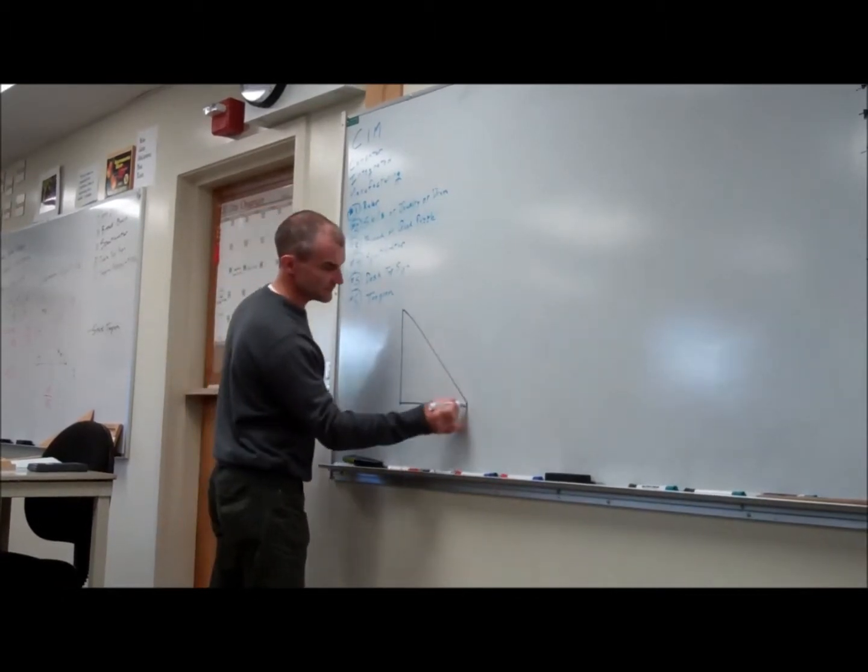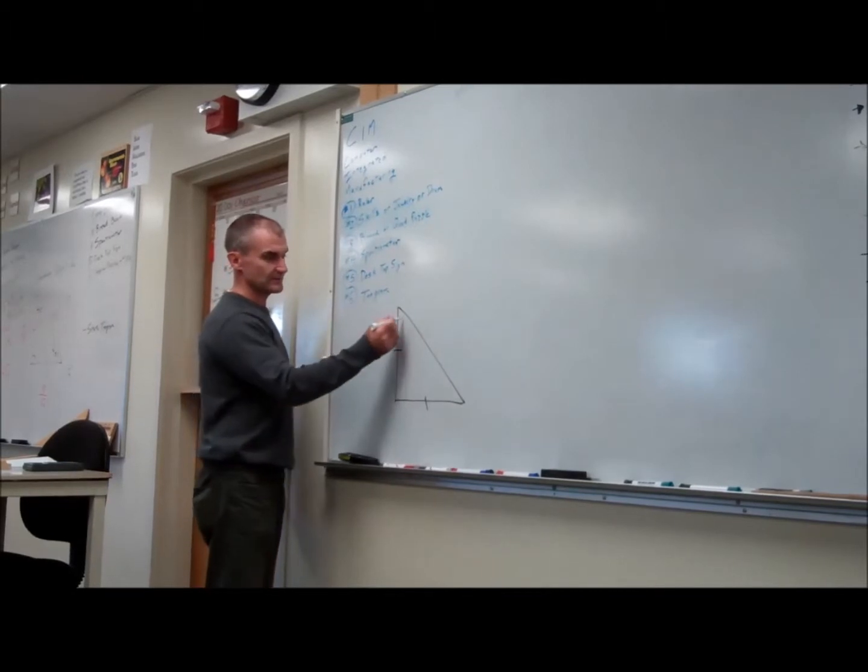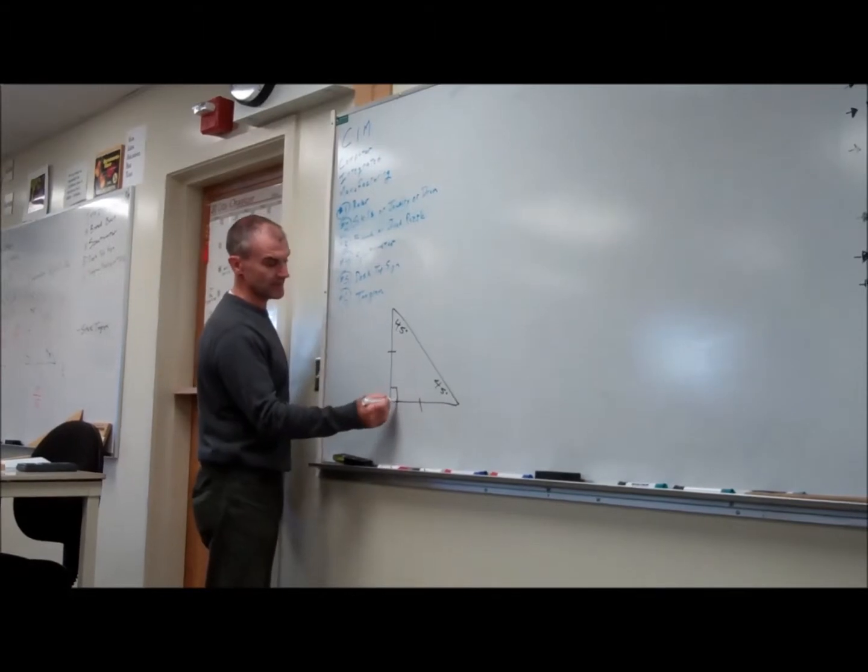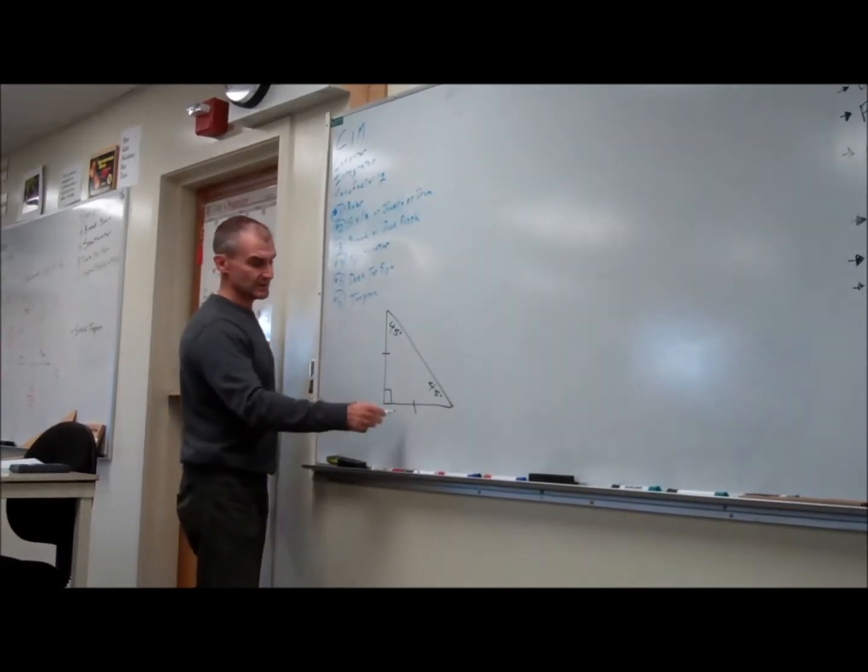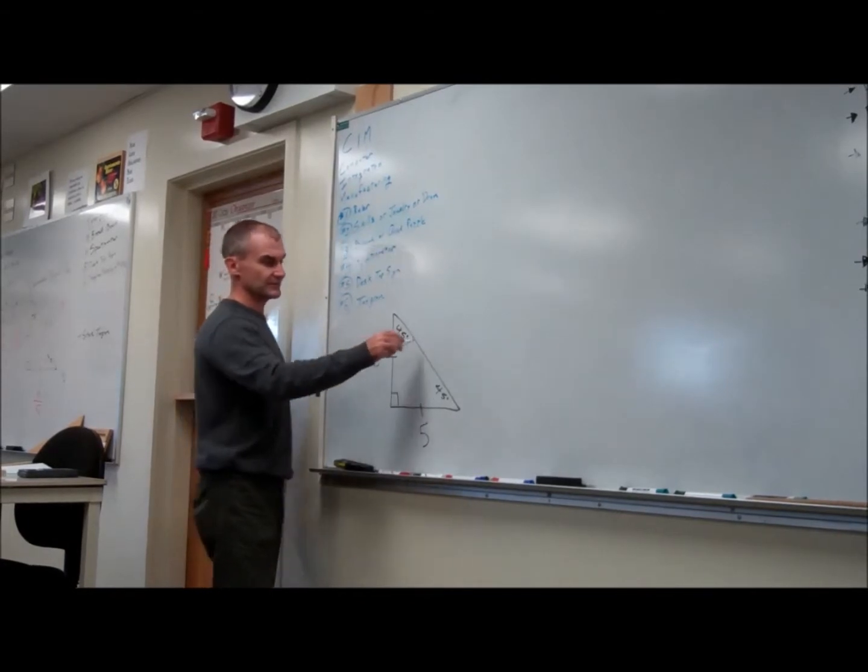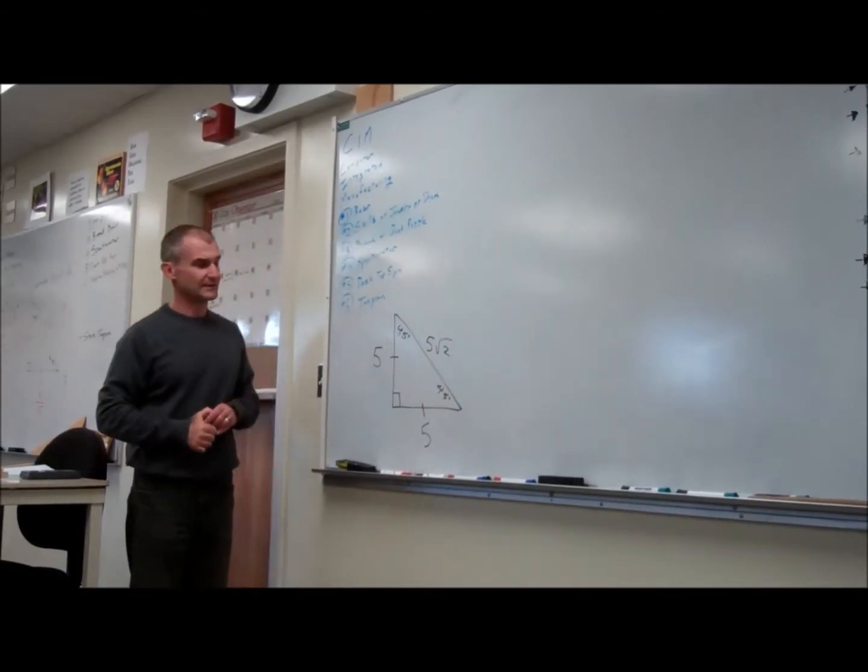In an isosceles right triangle, the isosceles means two legs are congruent, so the angles opposite them are congruent. The right means there's a right angle in here. So if this is five, this would be five, this would be five root two, and it always works out that way because of Pythagorean theorem.